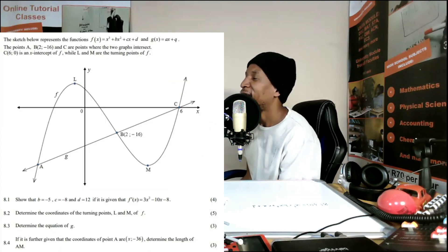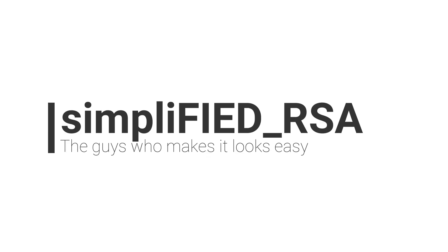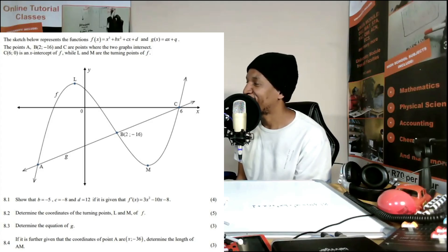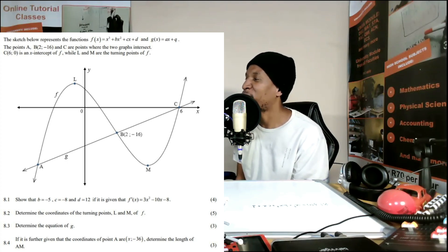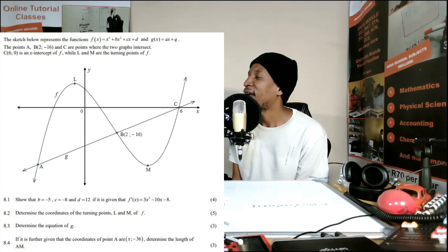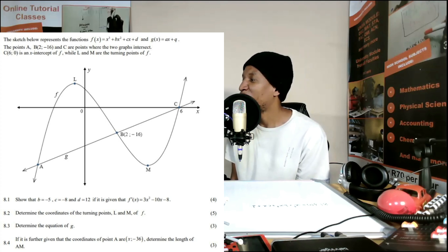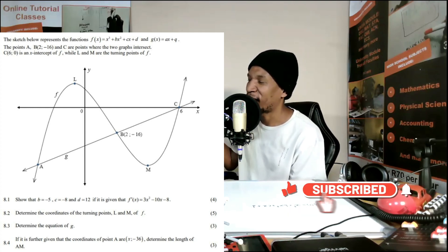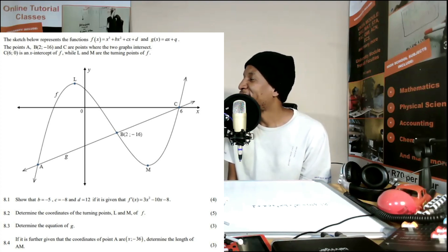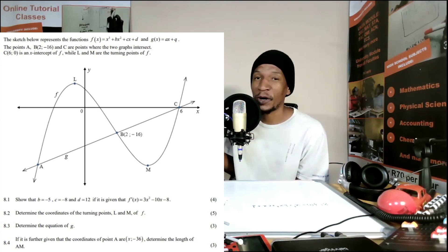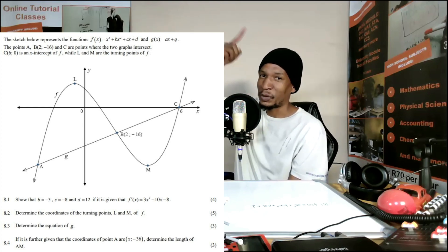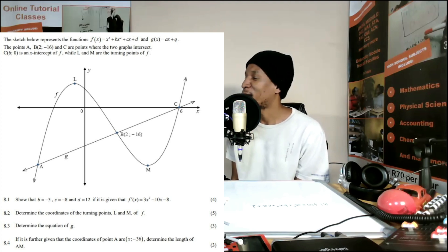This is our presented question for the day. The question reads: the sketch below represents the functions f(x) = x³ + bx² + cx + d, and g(x) = ax + q. Points A, B, and C — where B is (2, -16) — are points where the two graphs intersect. We are also given that C is (6, 0), which represents the x-intercepts of both functions. L and M are the turning points of f.